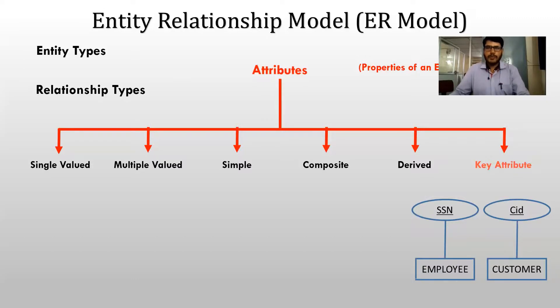To highlight a key attribute, we use an oval and underline the attribute name — for example, SSN is underlined. Similarly, customer ID is a key attribute because each customer has a unique ID and the field cannot be left blank. So these are the different types of attributes. Hope you have understood what attributes are, their different types, and the different notations used for them.